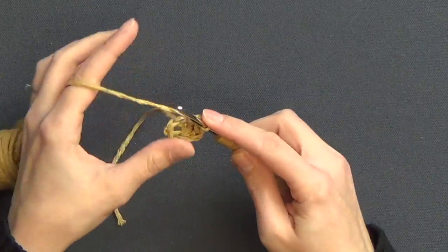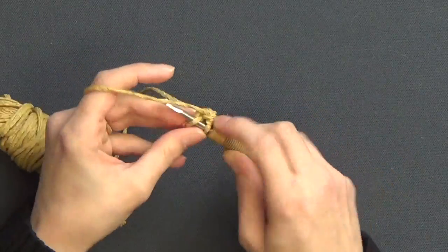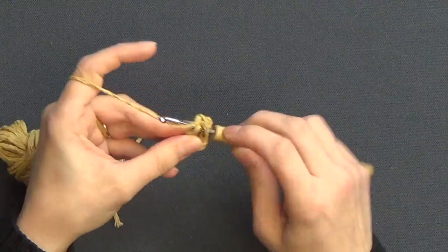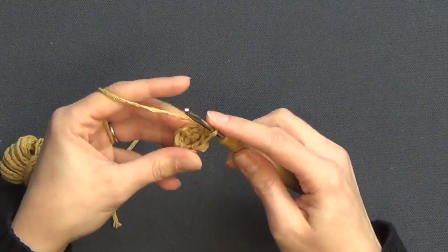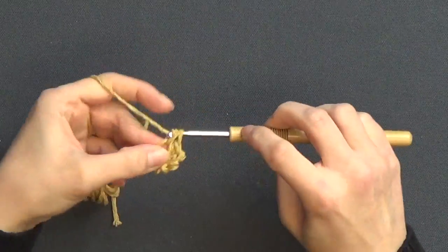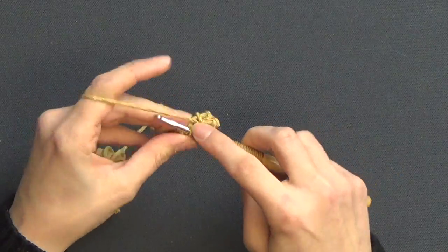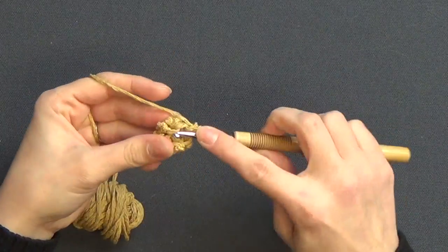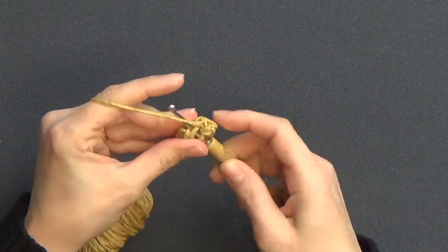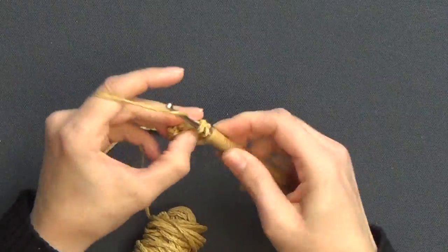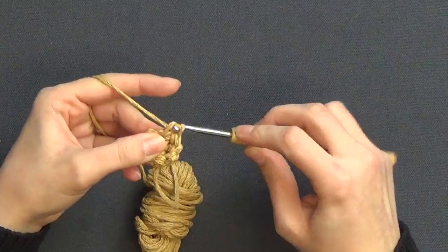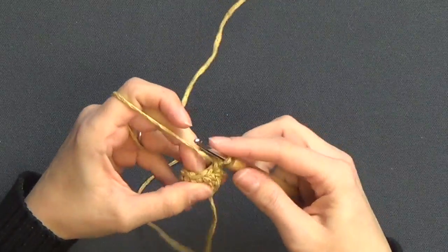You can notice how with this handle we're just working one single crochet in each stitch around and around without joining. So that's going to give us more of a spiral effect and there's no need to join at the beginning of the round because we're not changing colors, so we're not trying to avoid any sort of jogs in colors. We're just making a round basket handle.